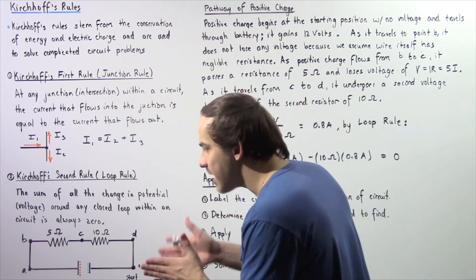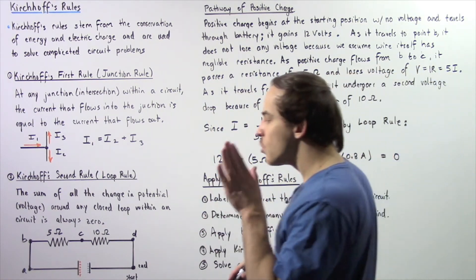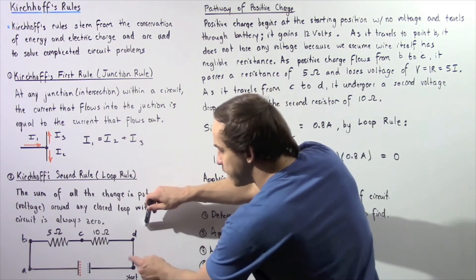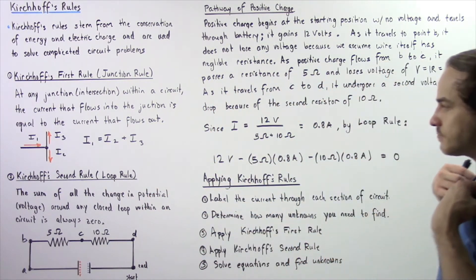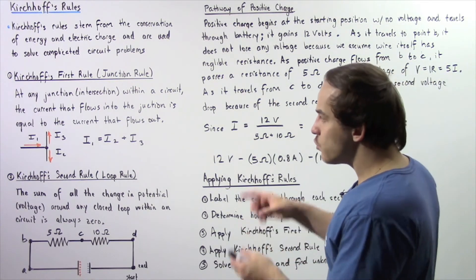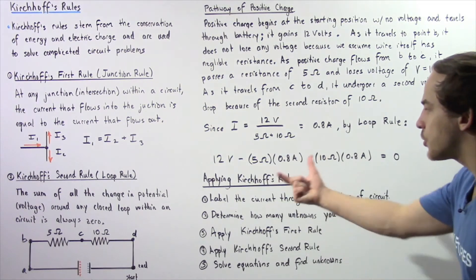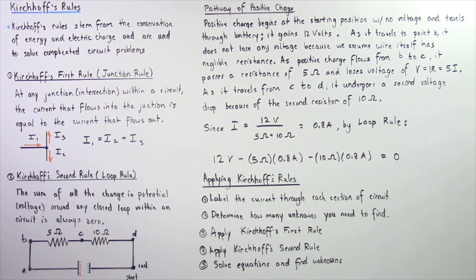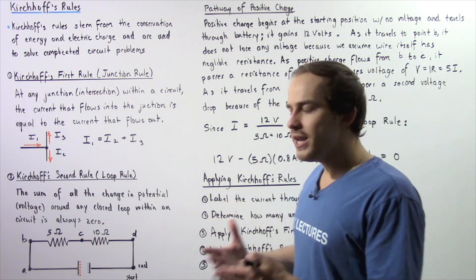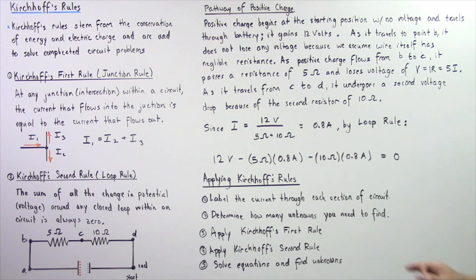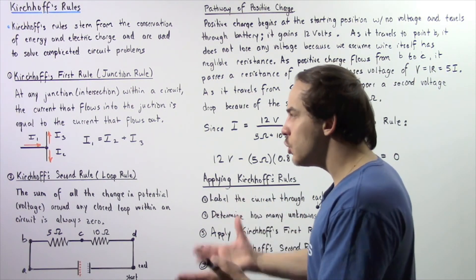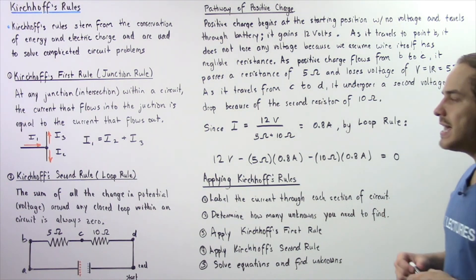Notice we assume the resistance of our wire is negligible, so when current flows from A to B or from D back to the initial position, there is no change in voltage. In the next lecture, we'll use these two rules to solve complex circuit problems. There are five steps to follow when applying Kirchhoff's rules: step one, label the electric current through each section of the circuit; step two, determine how many unknowns we have so we know how many equations we need; step three, apply Kirchhoff's first rule; step four, apply Kirchhoff's second rule — giving us a set of equations to solve for our unknowns.